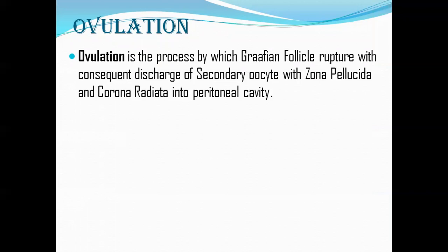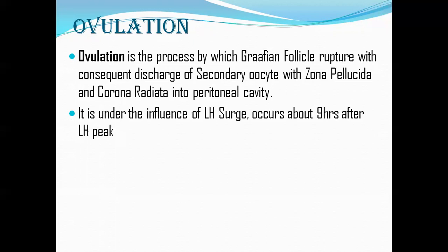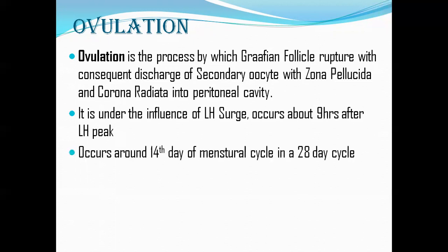Ovulation is the process by which the mature dominant Graafian follicle discharges its secondary oocyte. By the time of ovulation — about 3 hours before — the first meiotic division completes, forming the secondary oocyte. The secondary oocyte, along with the zona pellucida and corona radiata, is expelled into the peritoneal cavity under the influence of the LH surge, occurring about 9 hours after the LH peak. In a 28-day cycle, this is around day 14. The proliferative phase is notoriously variable, whereas the luteal phase is rather fixed.